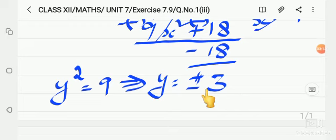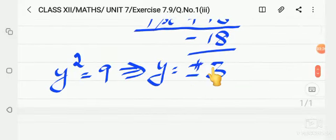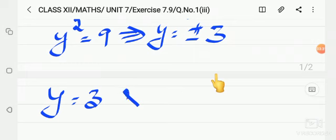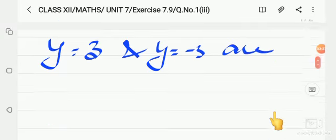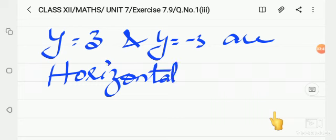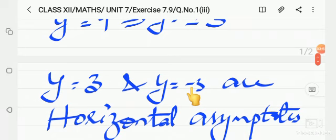Horizontal asymptote: y equals 3 and y equals minus 3. These are the horizontal asymptotes. So now we have these asymptotes. There are no vertical asymptotes and no slant asymptotes. Y equals 3 and y equals minus 3 are horizontal asymptotes. Thank you, children.